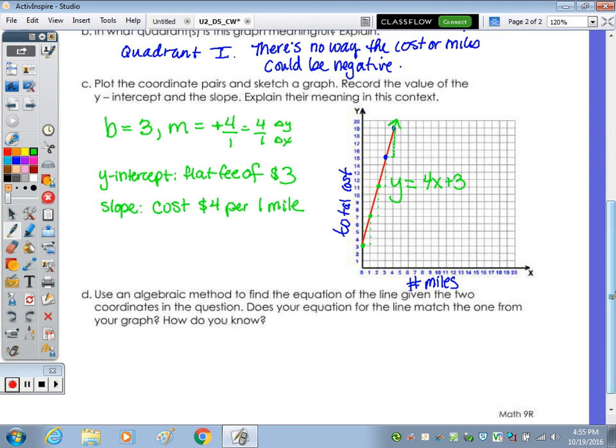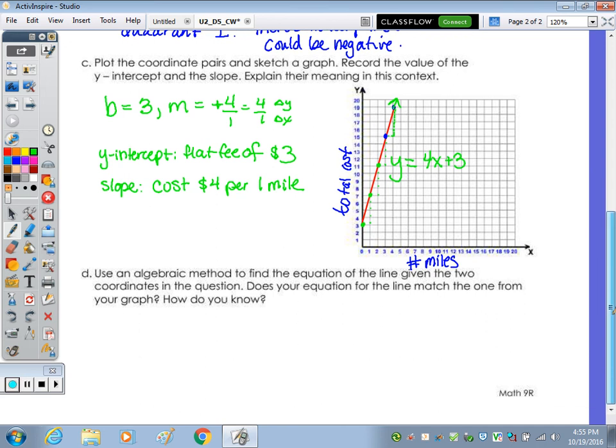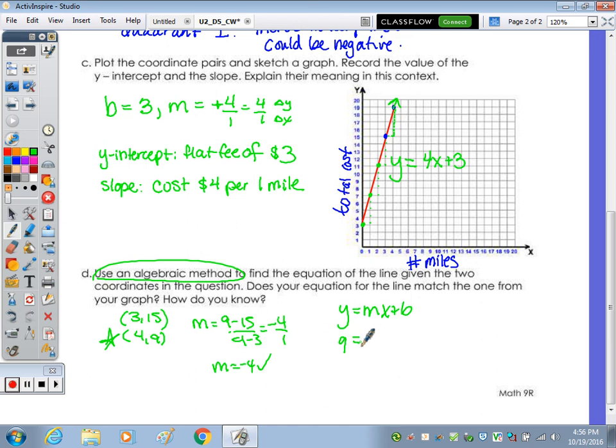At the bottom: Given the two coordinates in the question, use an algebraic method to find the equation for these two coordinates. Does the equation for the line match the one from your graph? How do you know? If I use an algebraic method using the two points of 3,15 and 4,19, we can see our slope is 9 minus 15 over 4 minus 3, which is negative 4 over 1. Wait, that's not right. To find b, I'm going to use y equals mx plus b, and I'll use the point 4,9. Actually, I'm not seeing if it's correct, I'm finding b. So 9 equals negative 4 times 4 plus b, so 9 equals negative 16 plus b.